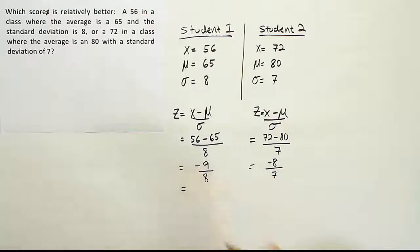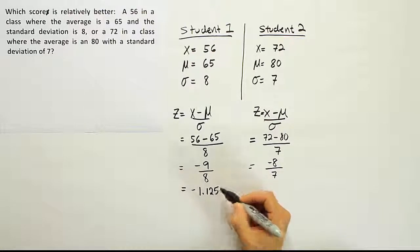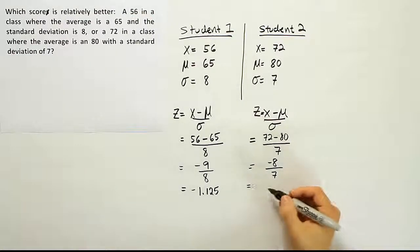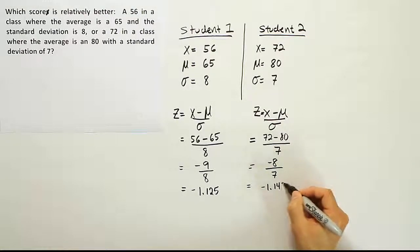Let's figure out what that gives us as a decimal. If we do that, we end up with 9 divided by 8, which gives us 1.125 below average, so negative 1.125. We'll talk about that interpretation in a minute. And 8 divided by 7 ends up giving us negative 1.143.